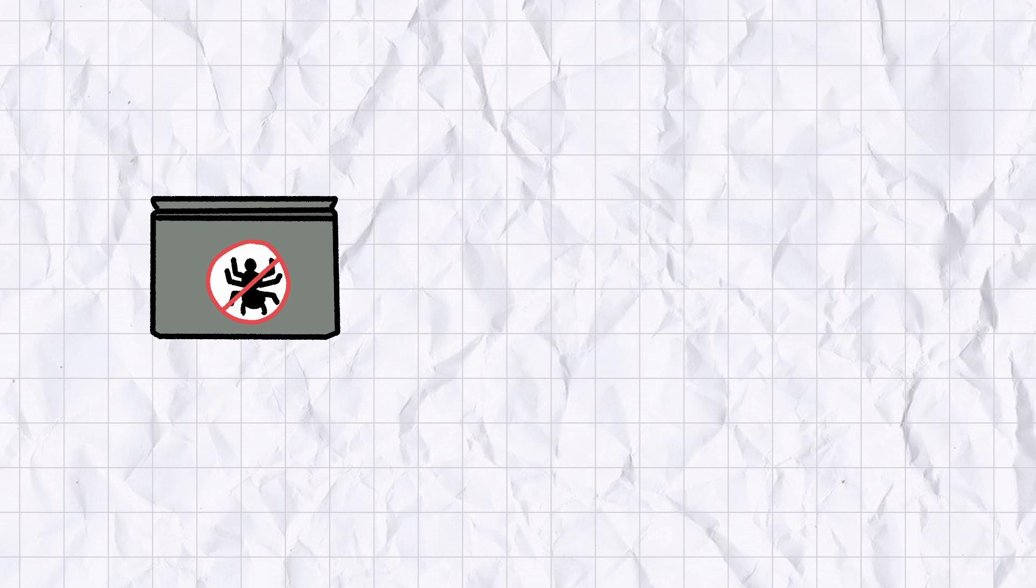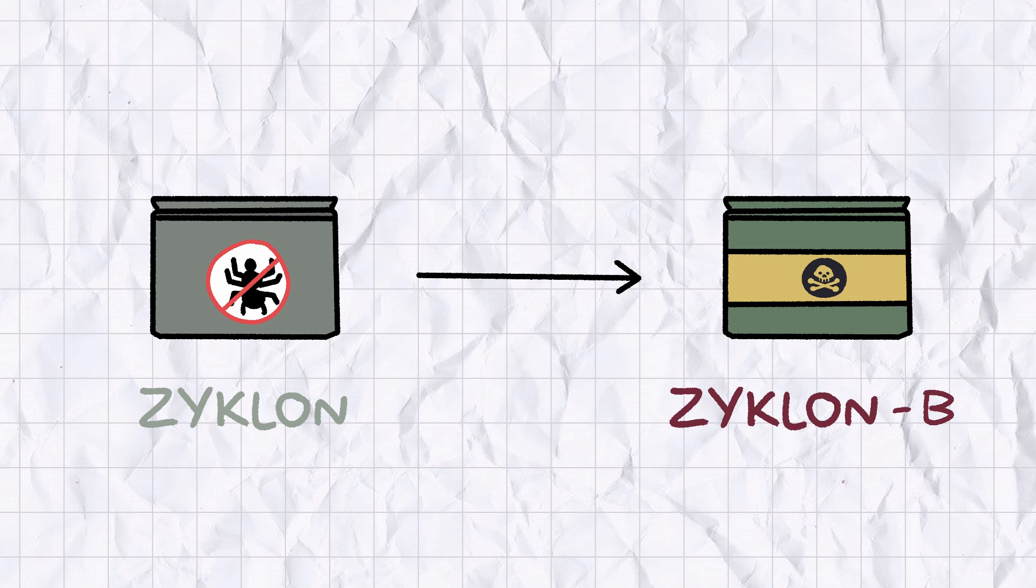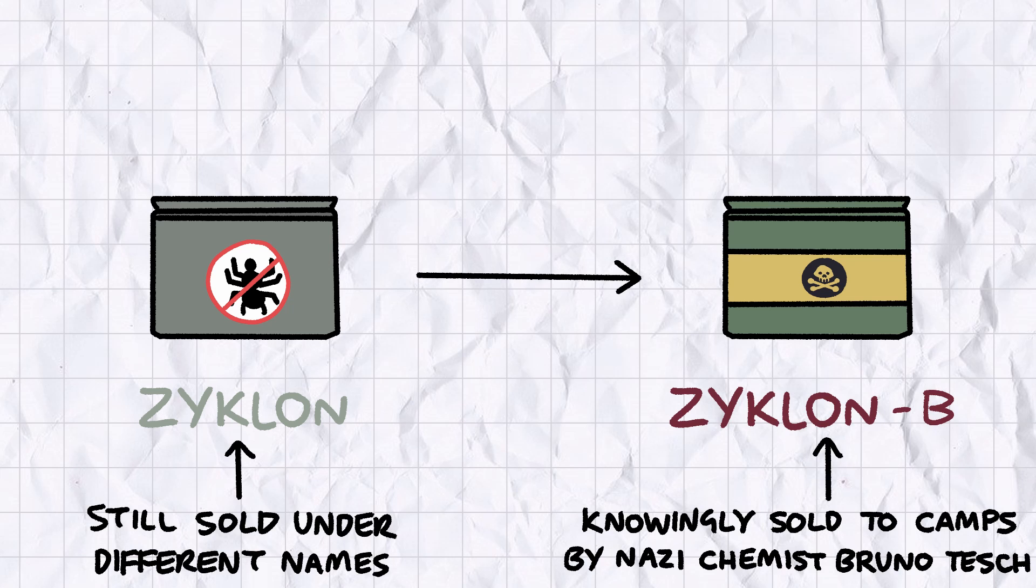In a cruel twist of fate, an insecticide developed by the Haber Institute called Zyklon was the base for Zyklon B, a chemical weapon used to execute millions of concentration camp prisoners in the Holocaust.